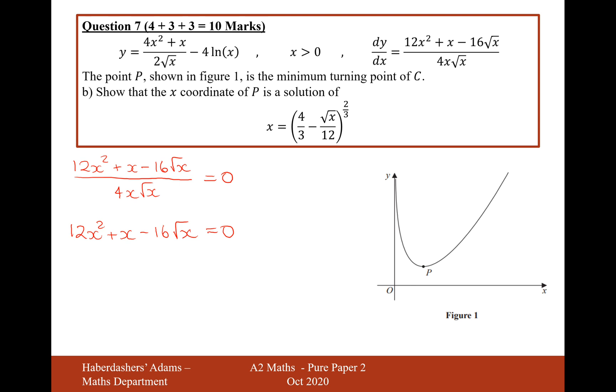So the next thing I need to do then is divide everything by the square root of x. We can clearly see here that x is not equal to 0, so the valid step here of dividing by √x is allowed. So if I divide by √x, it's going to be 12x^(3/2) plus √x on this bit here, and then minus 16 equals 0.